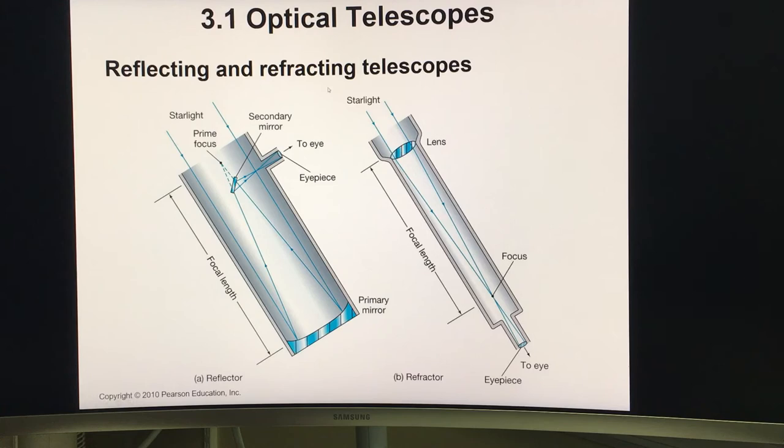The light coming here hits on the mirror, will be reflected back and will be reflected again by the second mirror, and then you can see the images through an eyepiece over here. On the right hand side we have a refracting telescope. Light coming here will be refracted and then we will be able to see the image somewhere here. Modern telescopes are all reflectors.